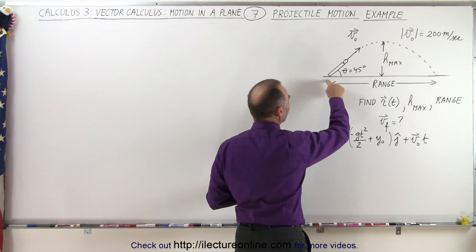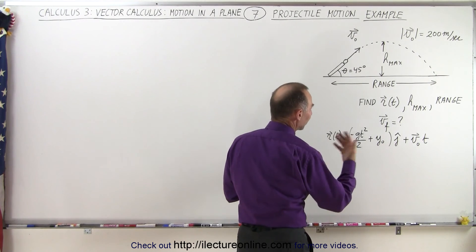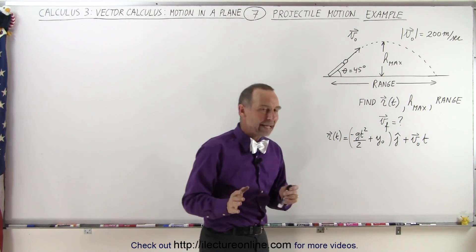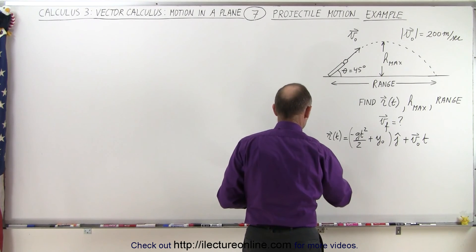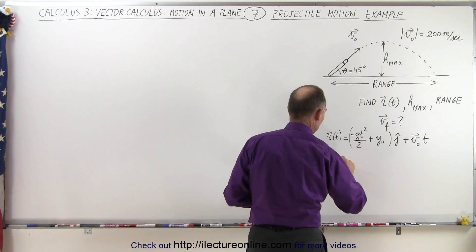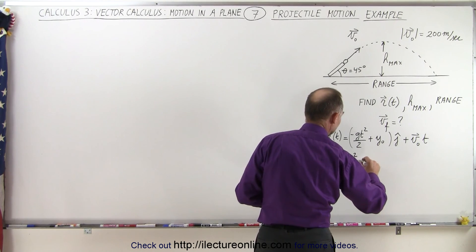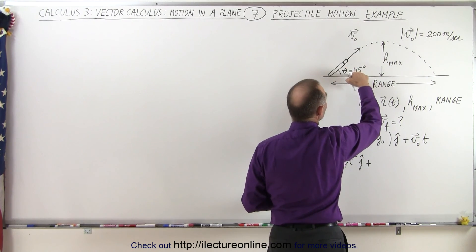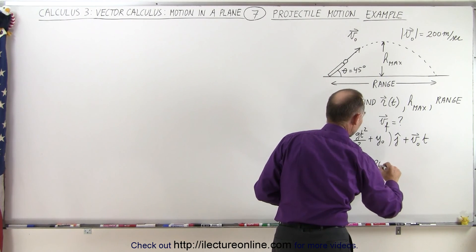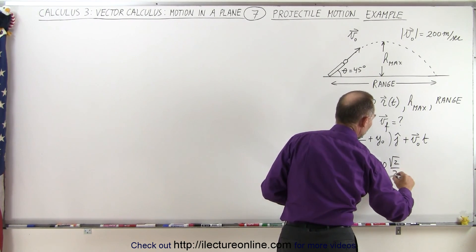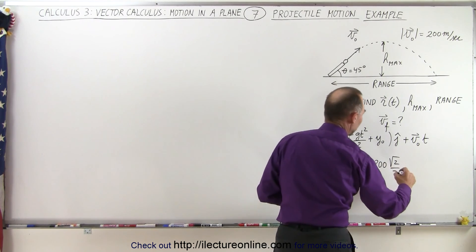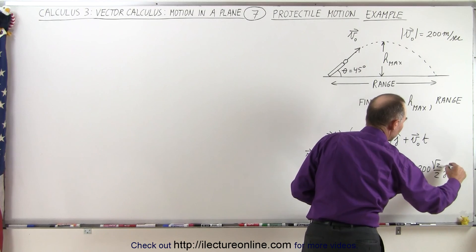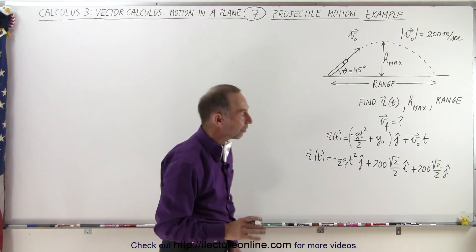The projectile is fired from the ground, so our initial height will be zero, which simplifies things. We're given the initial velocity and we can find the x and y components since we're also given the angle. So the position as a function of time equals minus one-half gt-squared in the j direction, plus the magnitude times cosine of 45 degrees — that's 200 times root-2 over 2 — in the i direction, plus 200 times root-2 over 2 in the j direction.